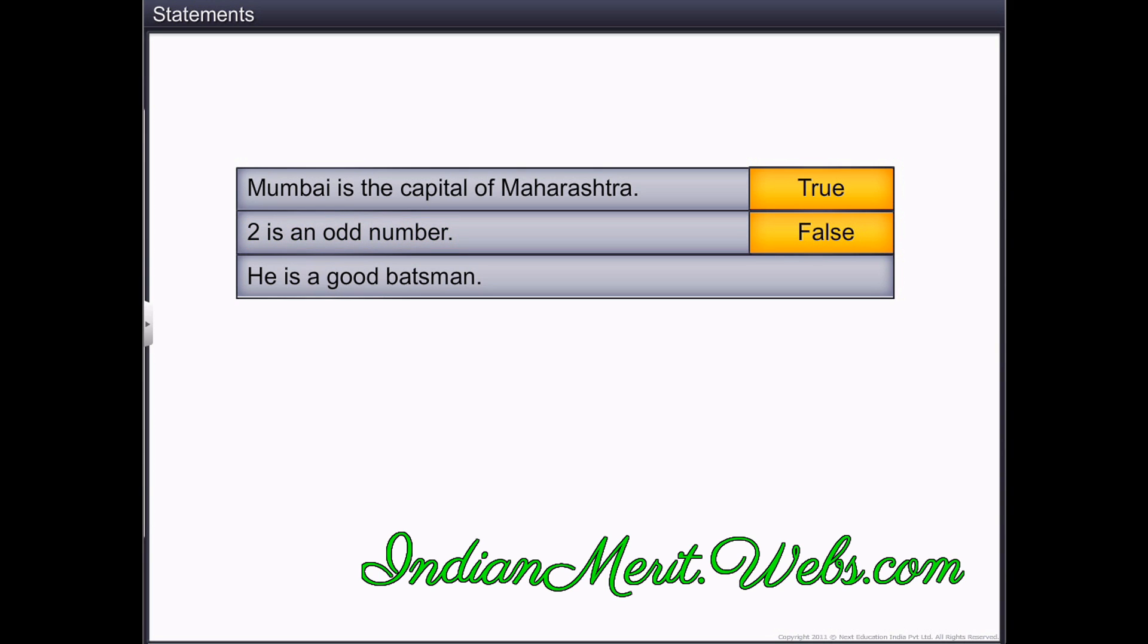Let's consider the third sentence. Here, the information is not sufficient to say whether this sentence is true or false. Here the word, he, is uncertain. Even if we know the batsman, it is not sufficient to decide whether he is a good batsman. This again depends on the perception of a person. It means that the given sentence is ambiguous.